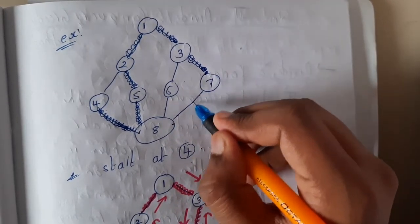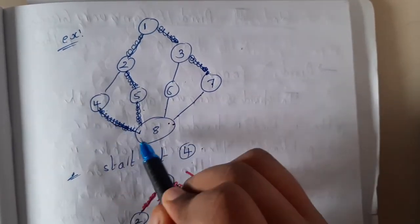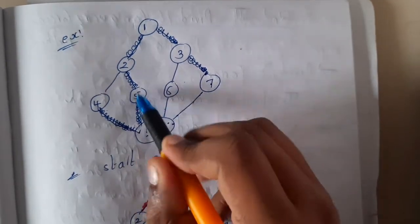From here if I want to go to eight, but it is already visited. So from start I am trying to visit new vertices only. 4 is visited, 8 is not visited, 5 is not visited, 2 is not visited, 1 is not visited, 3 is not visited, 7 is not visited.